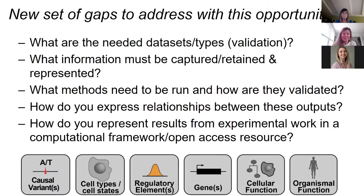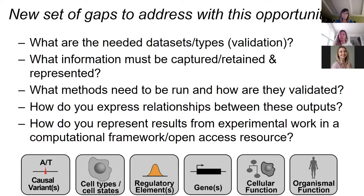We have a total set of gaps to address with this opportunity. We need to know what are the data types, how mature are they, what validation is needed — many times they still need to be generated. What information must be retained and captured and thereby represented? And because you have genomic and genetic annotations, oftentimes methods need to be run across them. These large-scale methods need to be run, but how are they validated, who decides, and how are the results then represented? That's really going to be the work over the coming years.